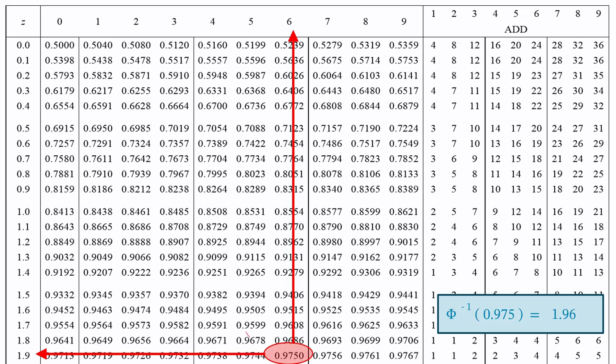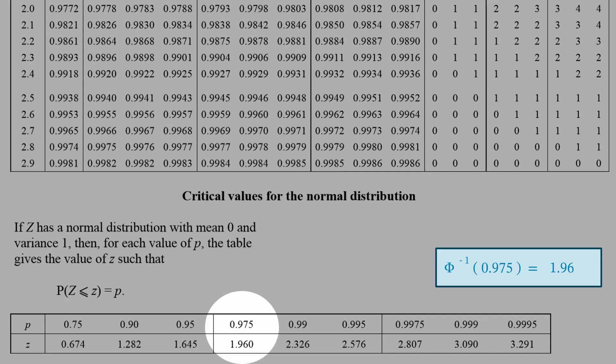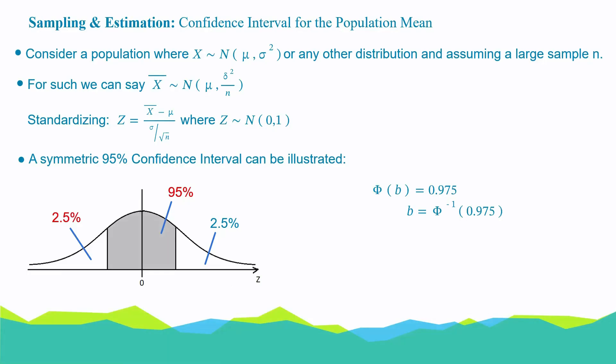We can also scroll down to the bottom of our normal tables, where we can easily get critical values for the normal distribution. So, for 0.975, it corresponds to a z value of 1.960. That's a much easier way of getting that z value. So, we have 1.96 for the value of b. And if b is 1.96, due to symmetry, it means a should be minus 1.96.